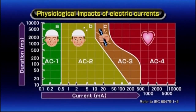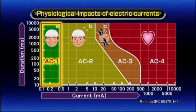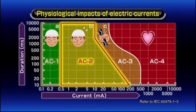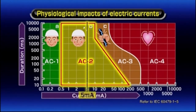This graph indicates the incremental physiological impacts on the human body of different electric currents. At level AC 1, no impact is felt. At level AC 2, there is no harmful impact — 5 milliamps is encountered at this level and causes no recognisable impact.